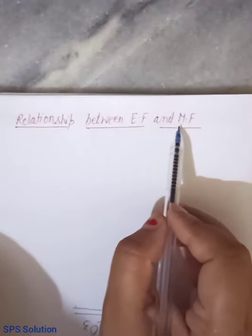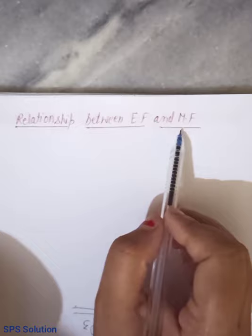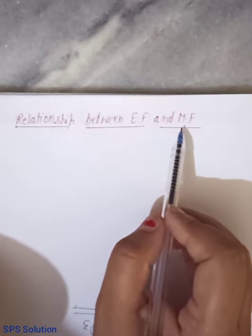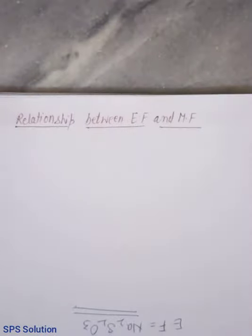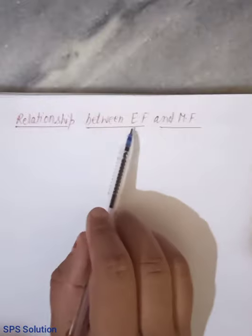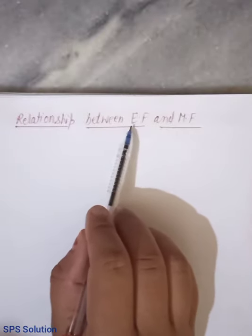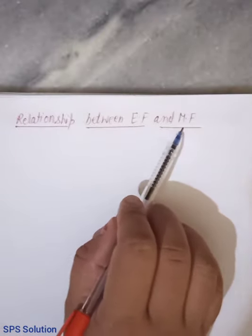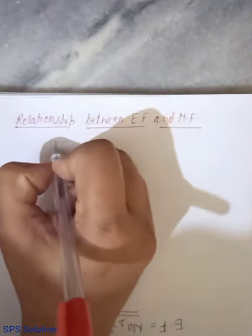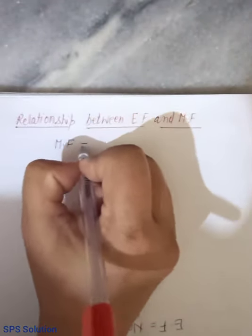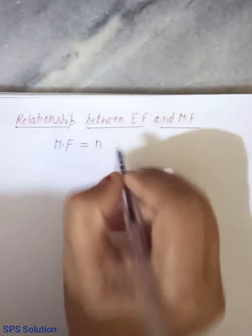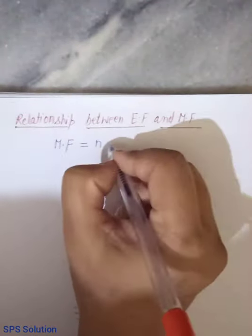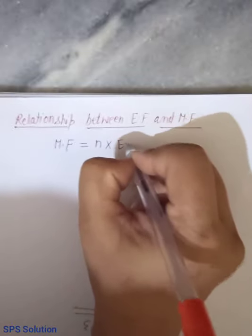Now, we have to discuss first this relationship for calculation of molecular formula. Molecular formula calculate karte waqt, there are something which we first have to know. So, first of all we have to discuss what is the relationship between empirical formula and molecular formula. So, molecular formula is equals to number of atoms that is small n into empirical formula.